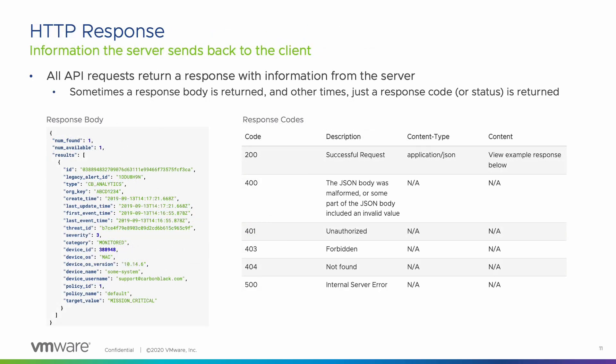When we send the request to search alerts, we can expect an HTTP response back from the server. In this instance, a response body will be returned containing a list of alerts, but if we were creating, deleting, or updating alerts, we would only see a status code in the response. These are some typical response codes you may see and what they mean. These codes can be found in our API documentation and are helpful for troubleshooting.